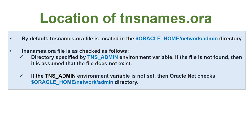The location of tnsnames.ora is by default in Oracle Home network admin. However, if you have set the TNS_ADMIN environment variable, then Oracle will look for the tnsnames.ora file in the directory that variable points to. If that directory does not exist, Oracle will think tnsnames.ora does not exist, even if the file exists elsewhere. So if you set TNS_ADMIN, make sure you create the tnsnames.ora file in that specified location.